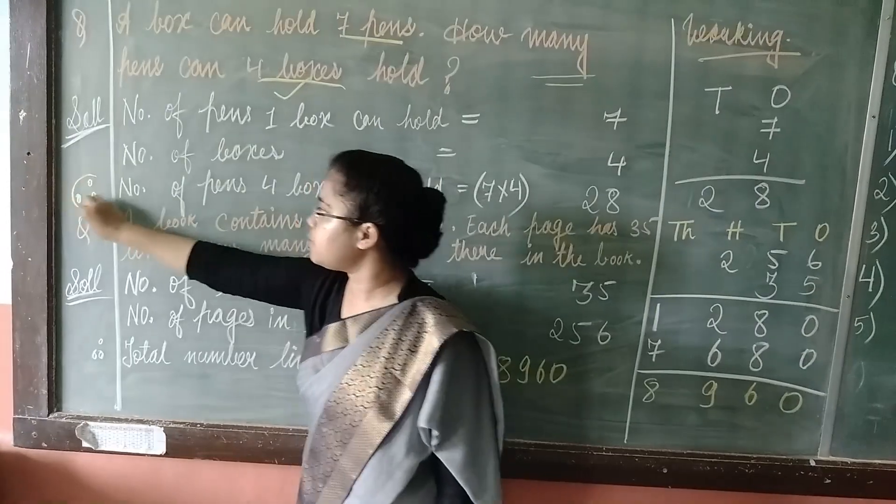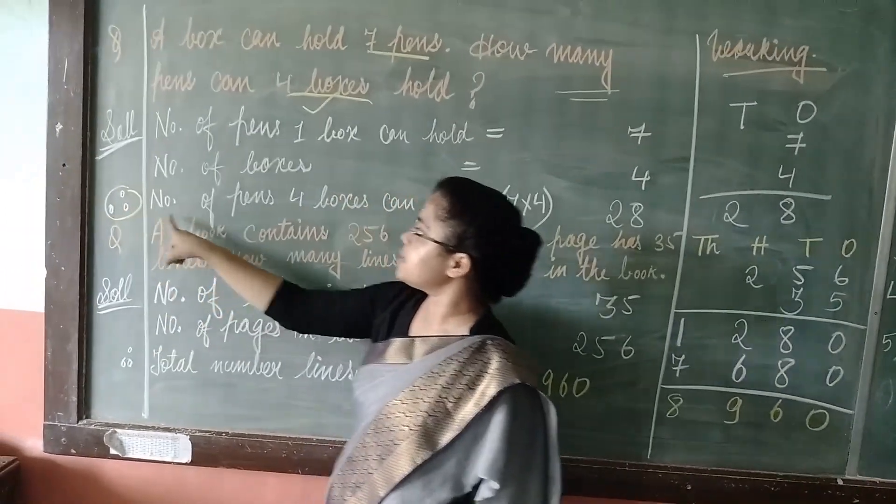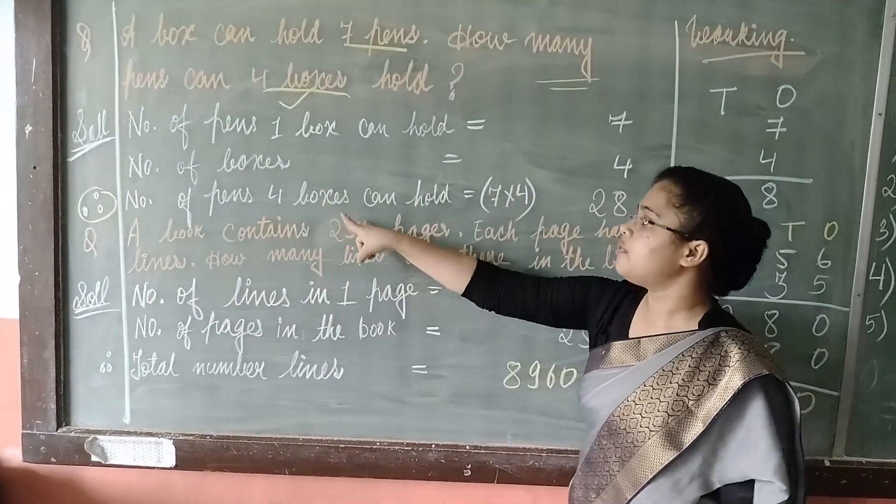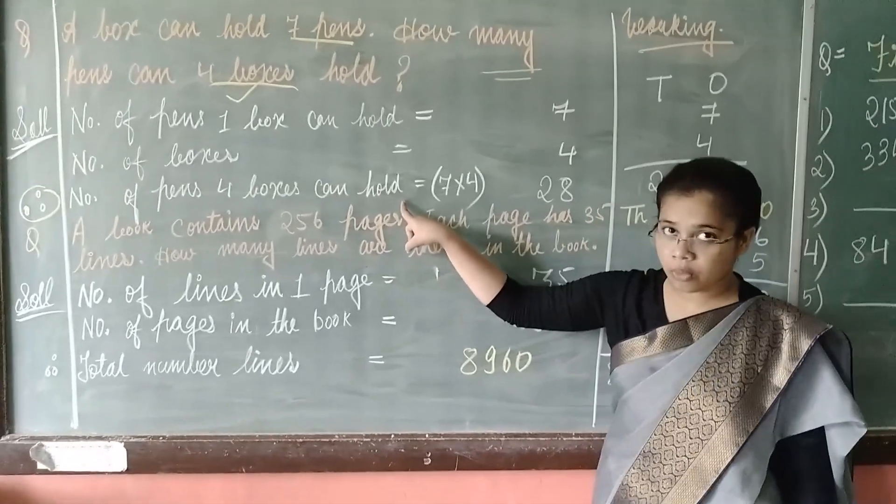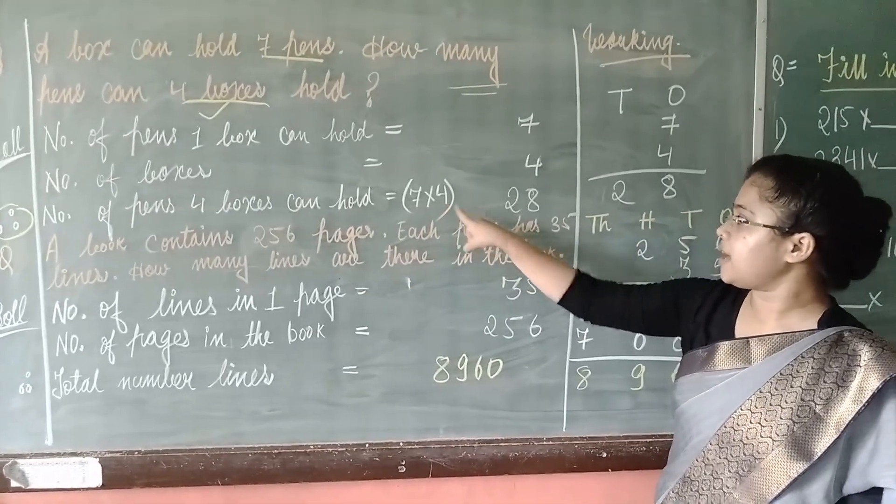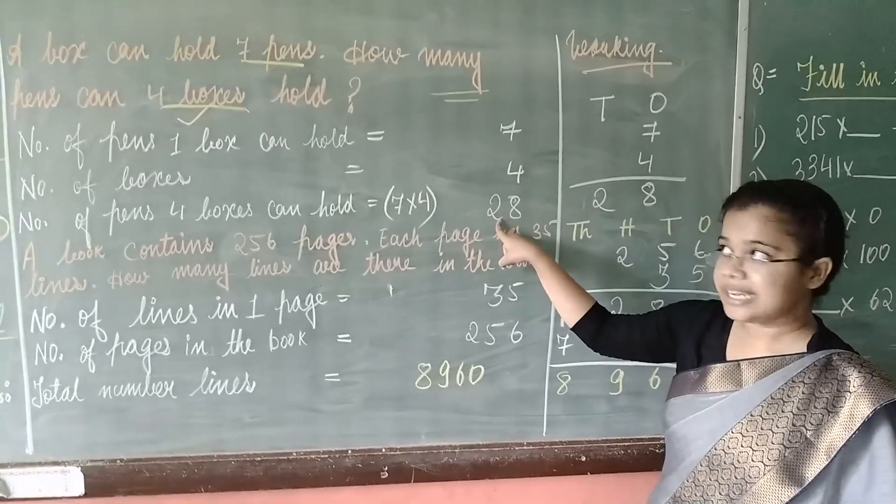Therefore, you know that you have to write therefore like this. Number of pens 4 boxes can hold, that is 7 multiplied by 4. That is 28.